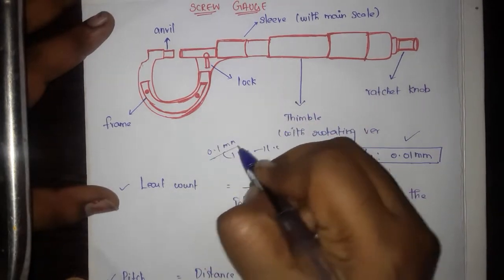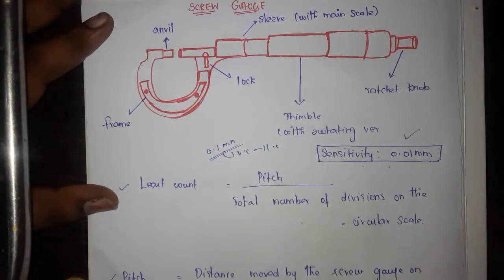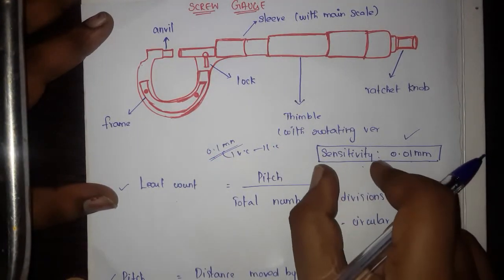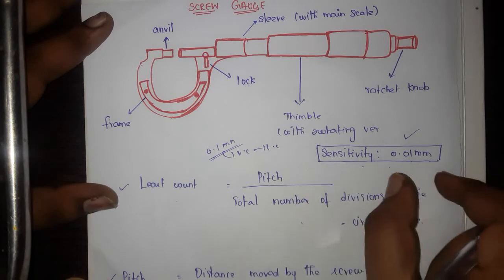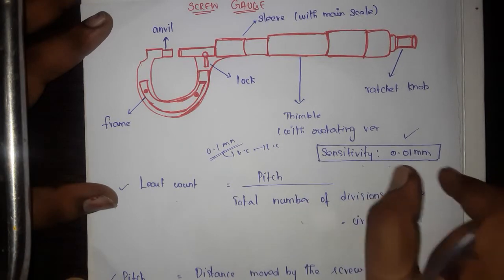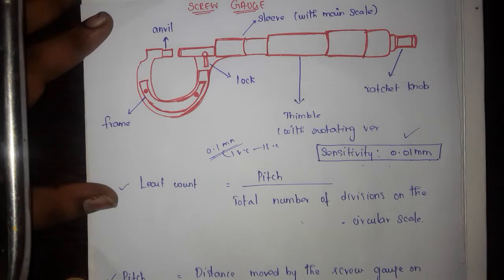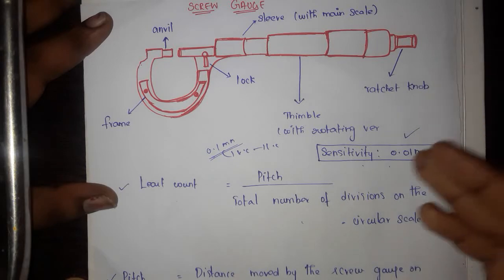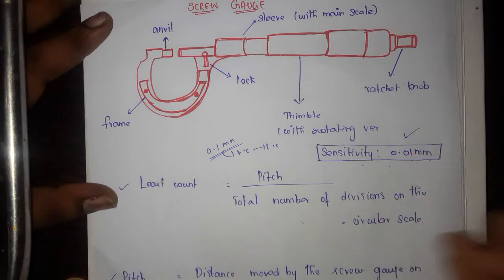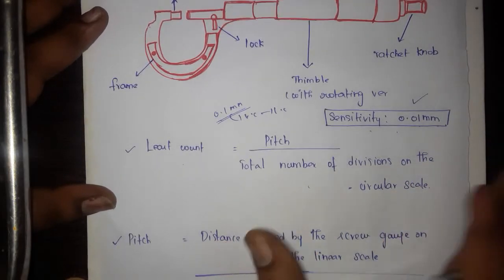Why do we compare Vernier Caliper? You can measure the width of a sheet with it. But if you use the Screw Gauge, you can also measure the width of a sheet. Comparing both, the Screw Gauge is the more precise instrument.